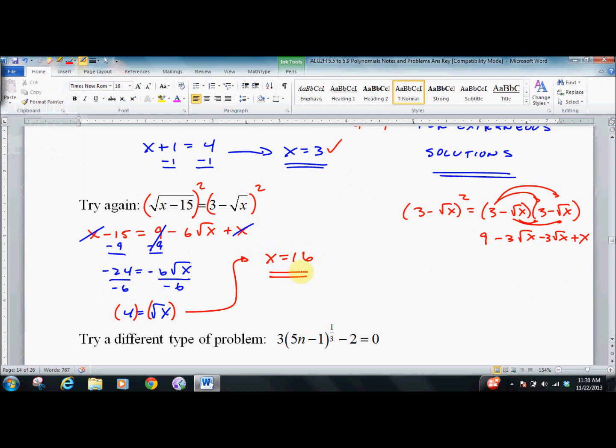But before we say yes, we're done, we do have to check it. You just don't know. 16 minus 15 is 1. Square root of 1.